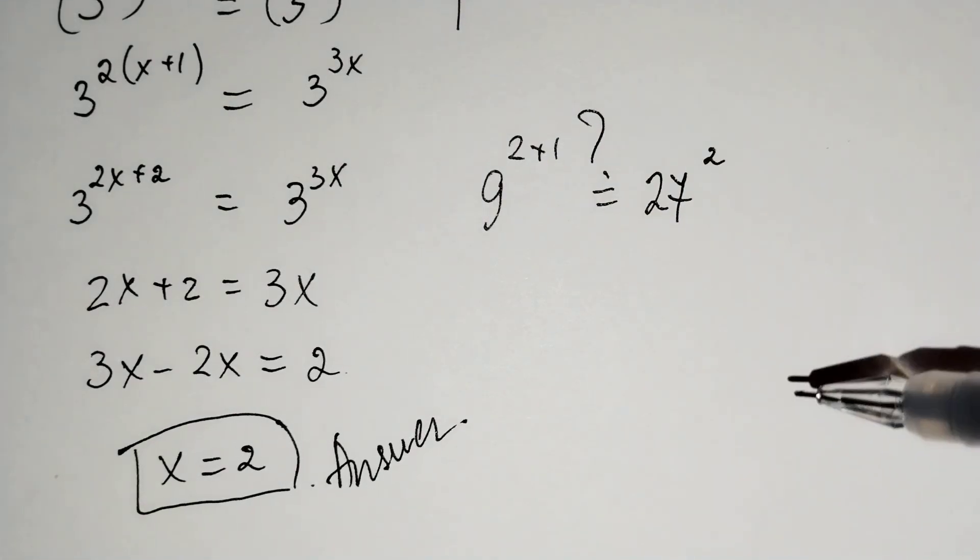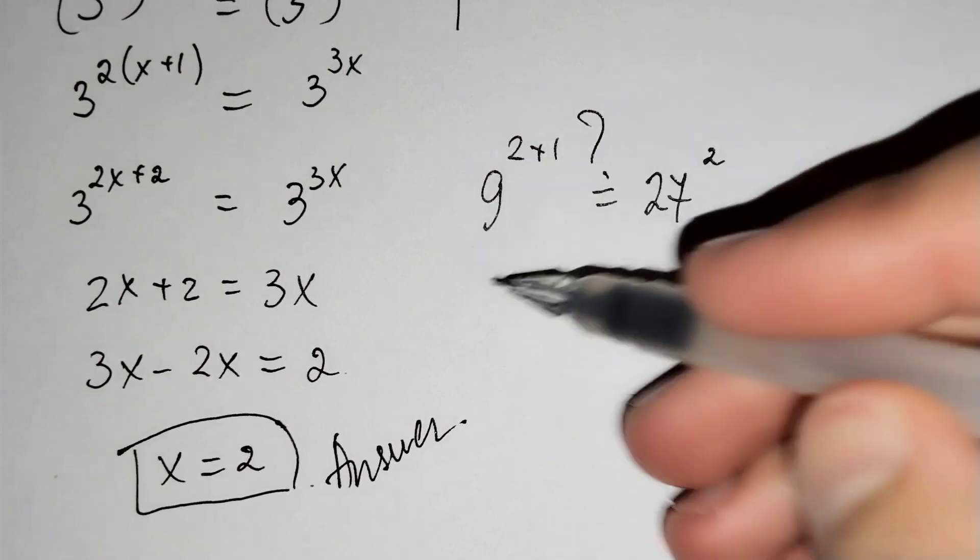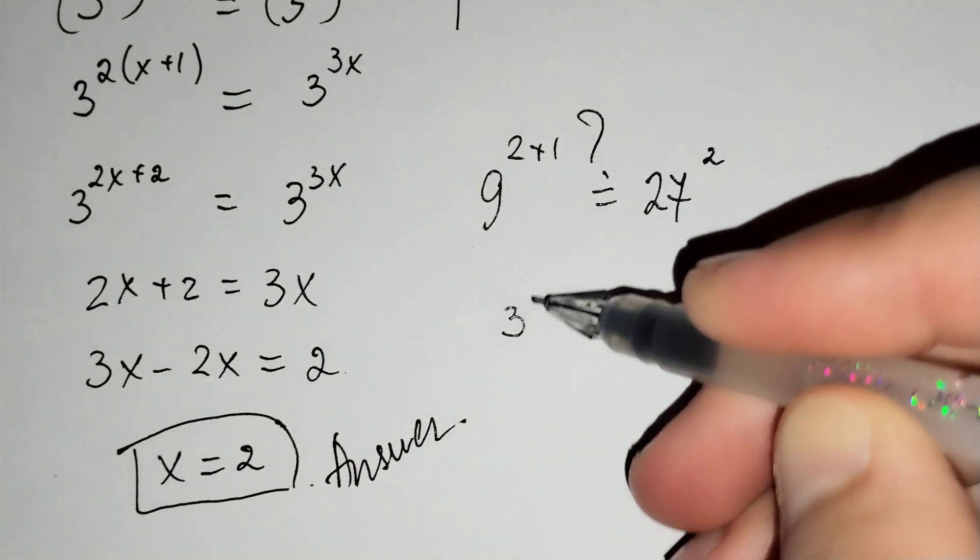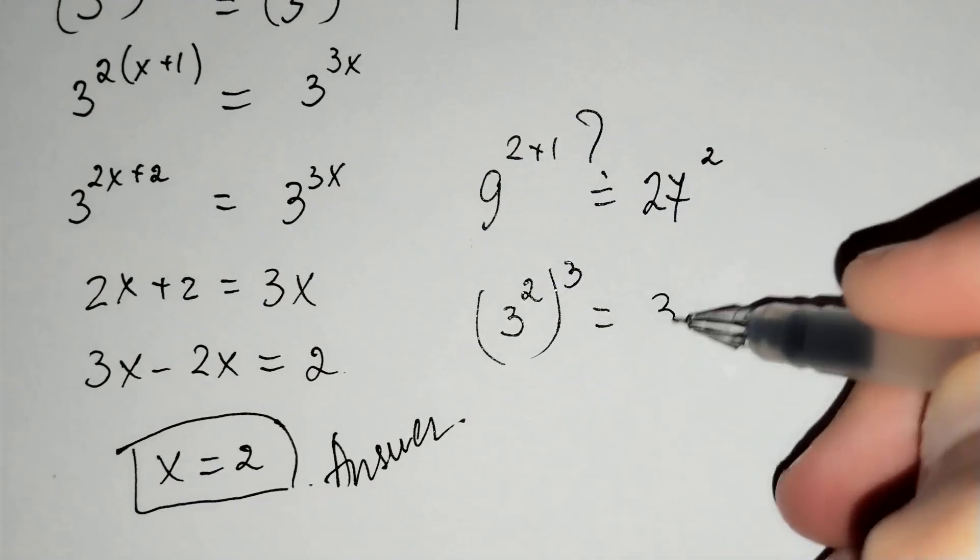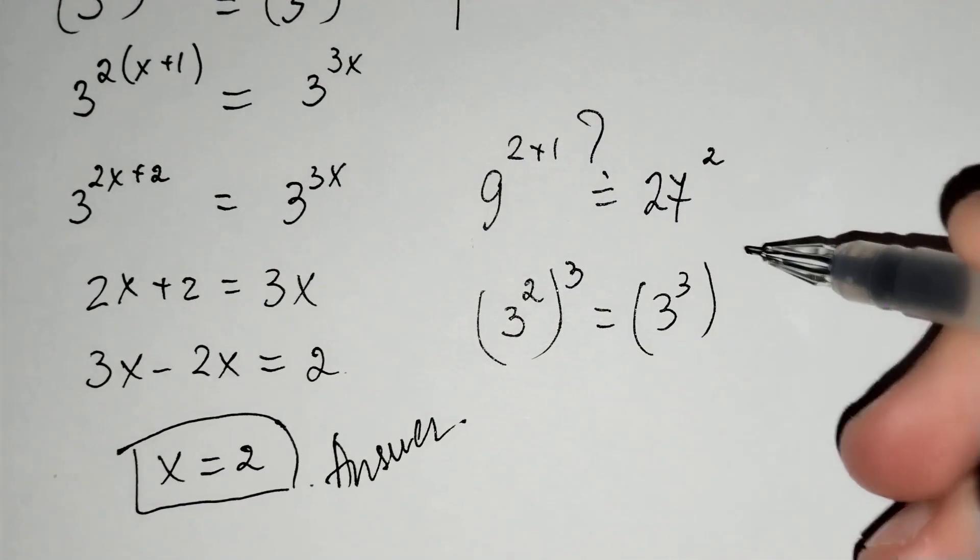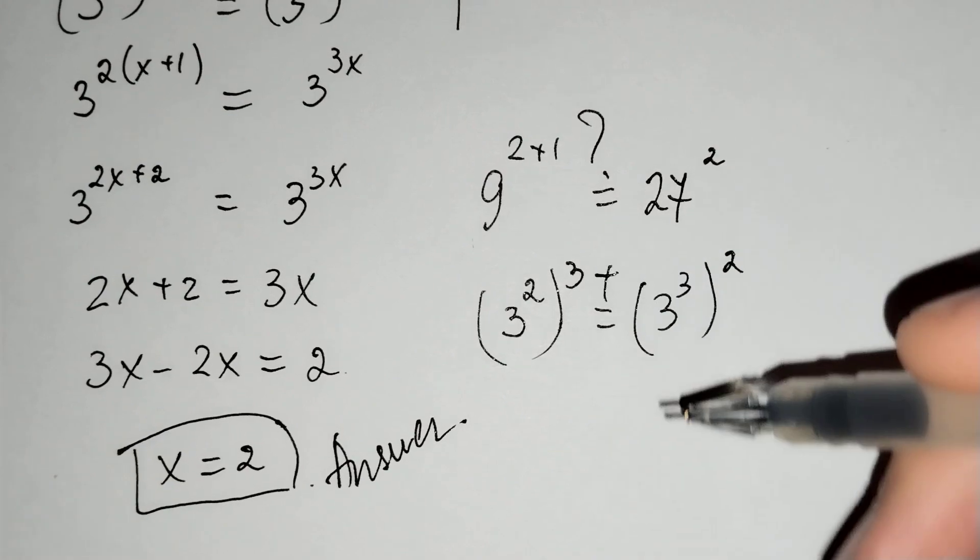Is it true? 9 to the power of 3 equals 3 squared to the power of 3, which equals 3 cubed to the power of 2. This is a true equality.